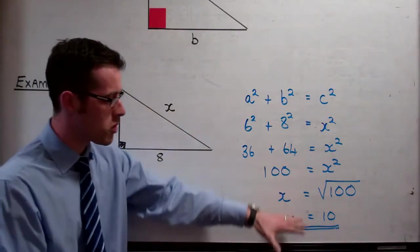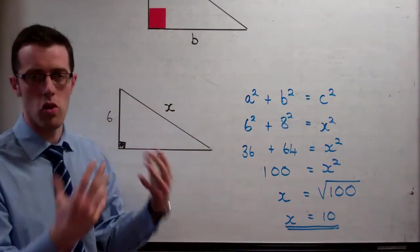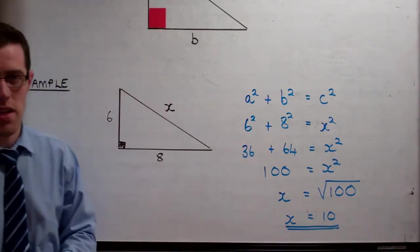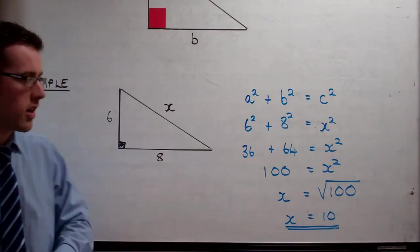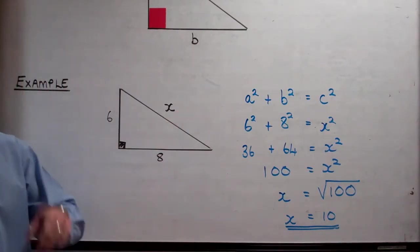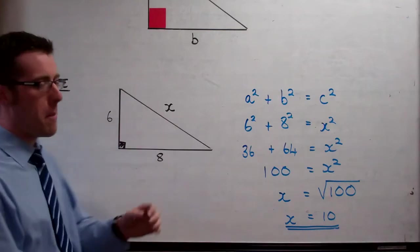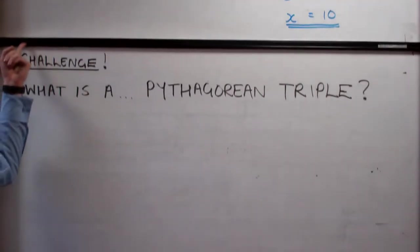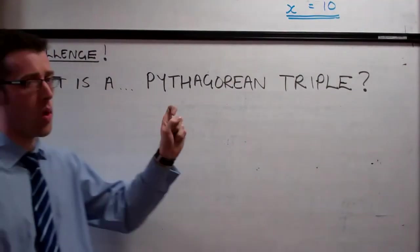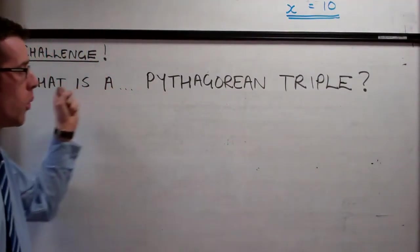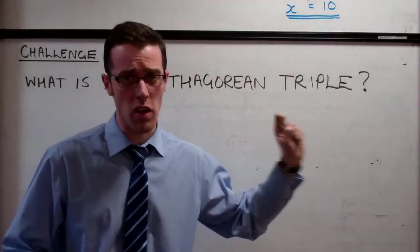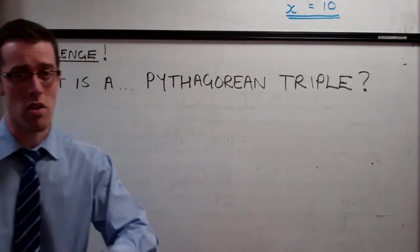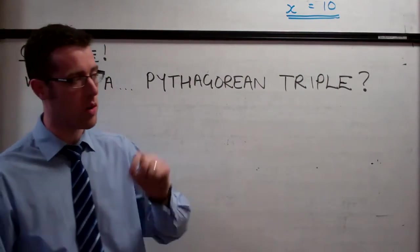Sometimes we get decimals involved in this. Sometimes we've got more difficult numbers, but we can just use our calculator and we'll look at that next day. But that's one of the basic examples for Pythagoras. Now the 6, 8, 10 triangle is one of the Pythagorean triples. Your challenge for next day is to tell me tomorrow, or next time you're in maths, what is a Pythagorean triple? I want you to look up tonight, I want you to find out what it is, and I want you to try and memorise some for tomorrow. Because they're very important and also very useful.